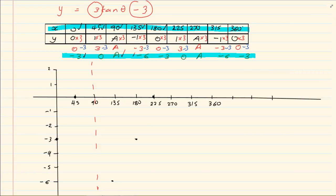We have 225 and 0, and we have an asymptote again. Then we have 315 and minus 6, and we have 360 and minus 3.